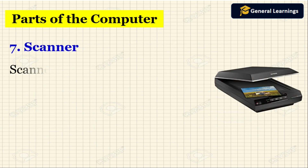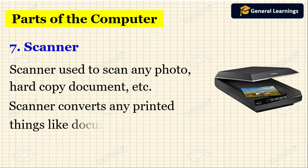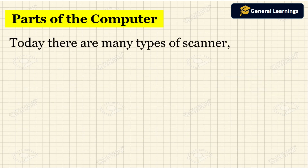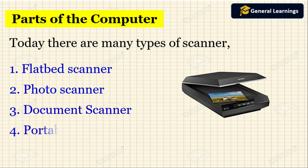The next part is the scanner. A scanner is used to scan any photo, copy, or document. It converts any printed material like a document into digital form that can be stored in the computer for future purposes. The types of scanners available in the market are: flatbed scanner, photo scanner, document scanner, and portable scanner.